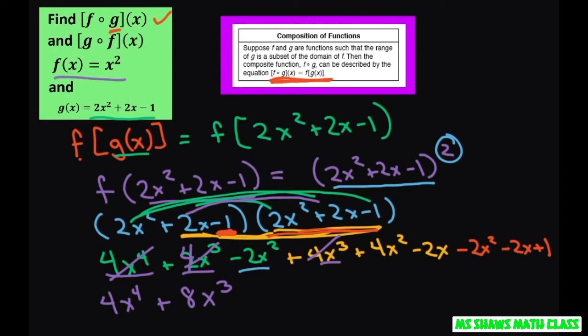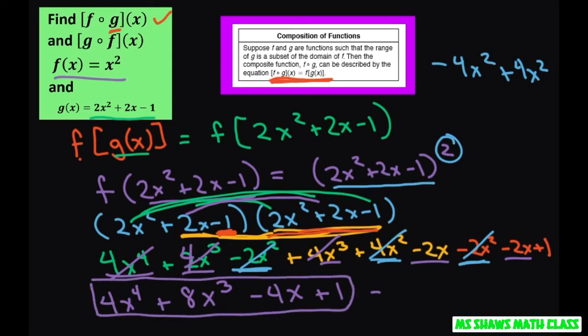Now for my squares, this is negative 4, this is negative 2 minus 2 is negative 4. So basically, we have negative 4x squared and then plus 4x squared. That equals 0. So we don't need to write anything for those. That just zeroes out. Now for our x's, we have negative 2x minus 2x. So that's going to be minus 4x. And then we have plus 1. So that's your final answer for f of g of x.